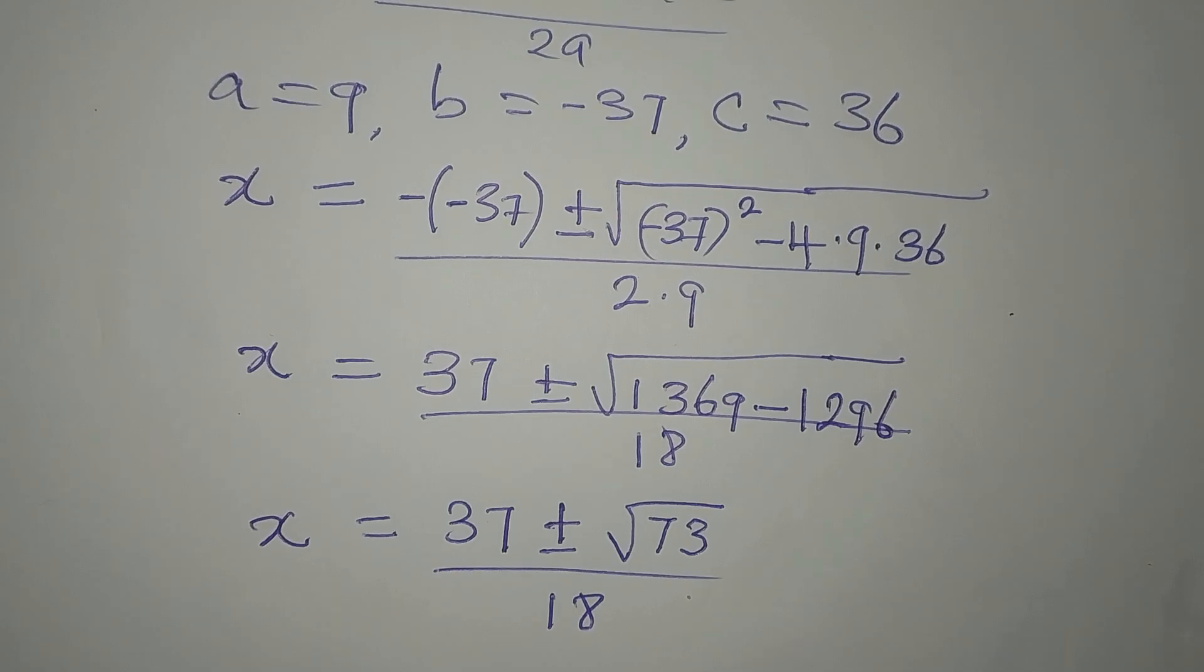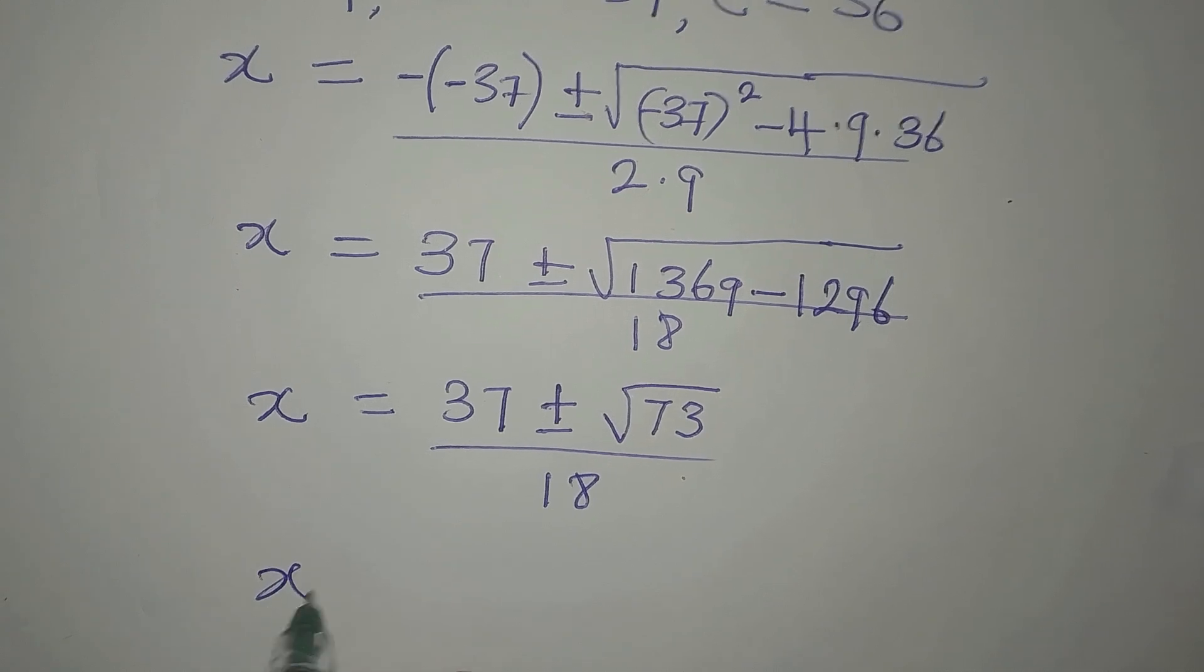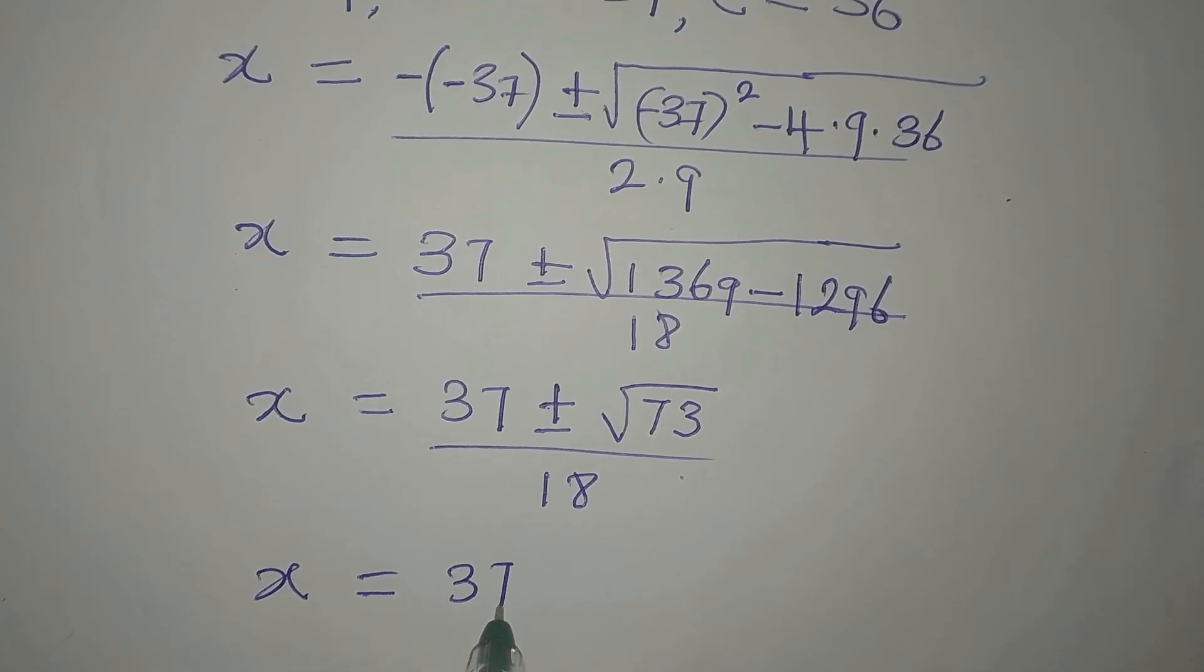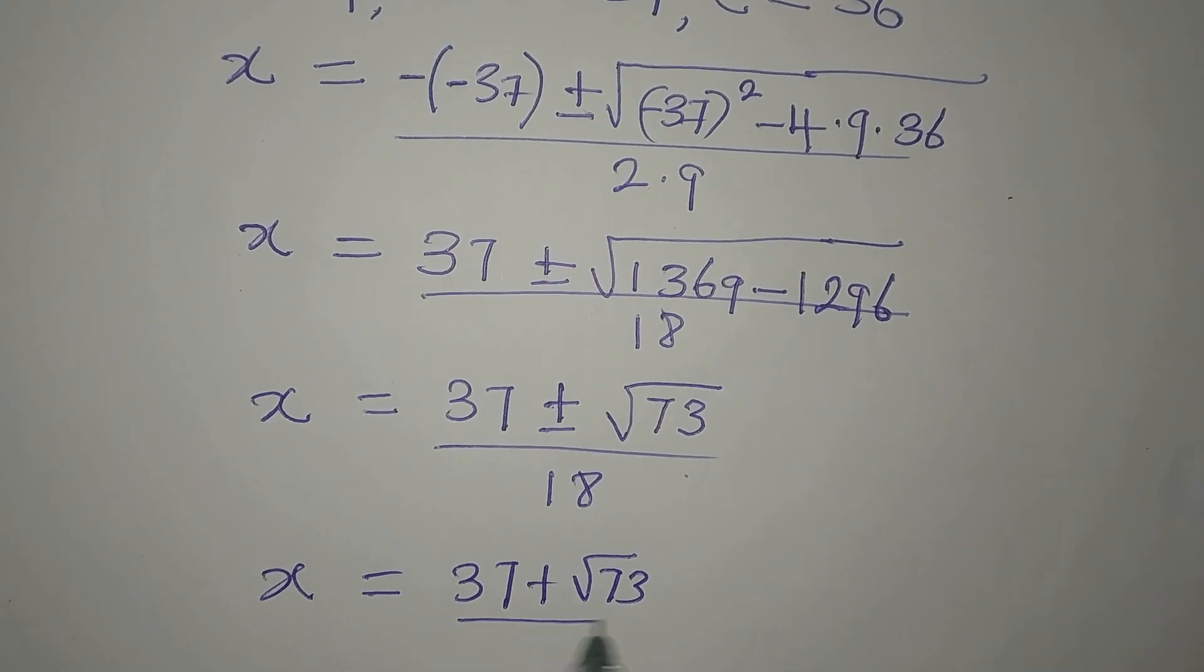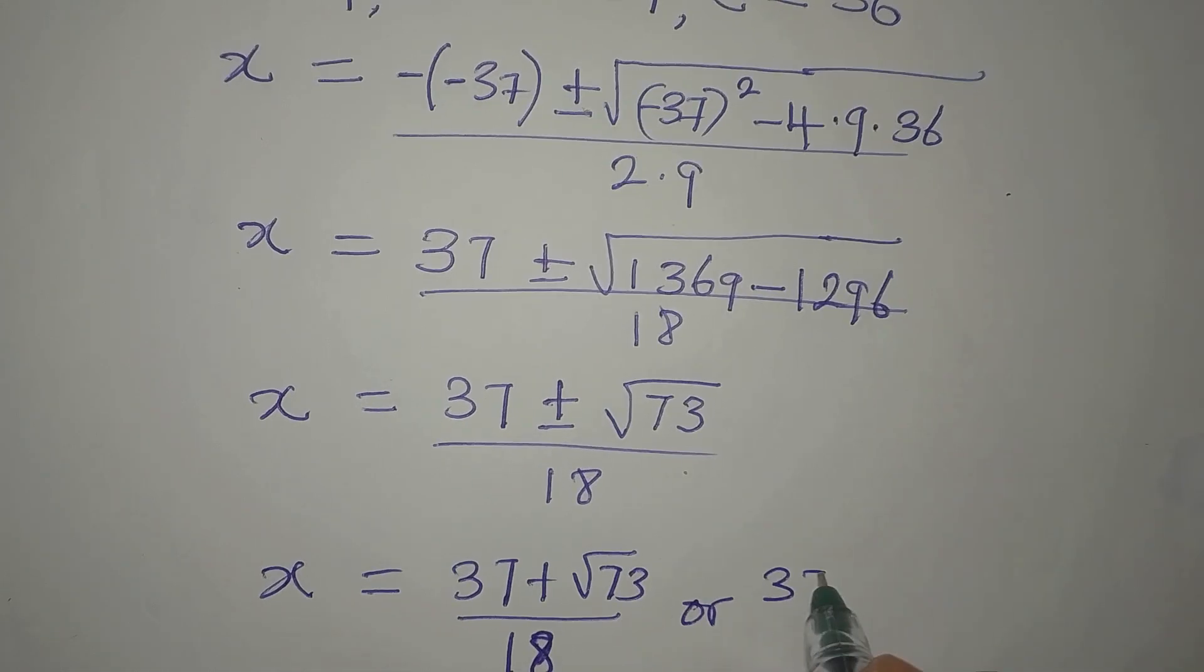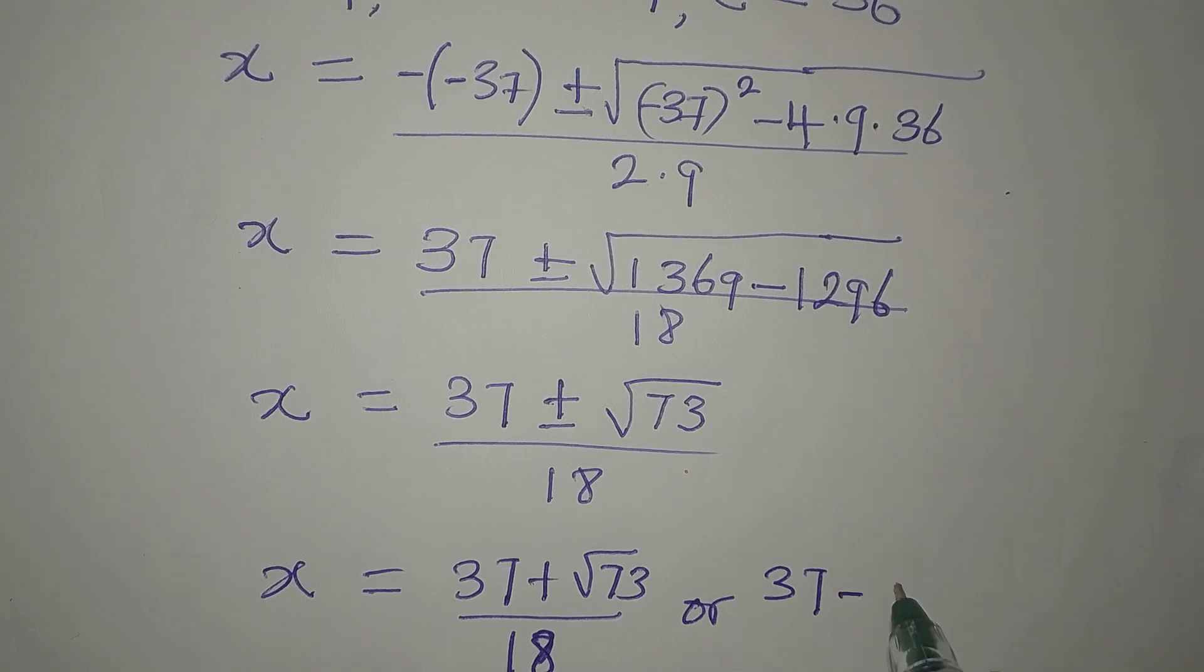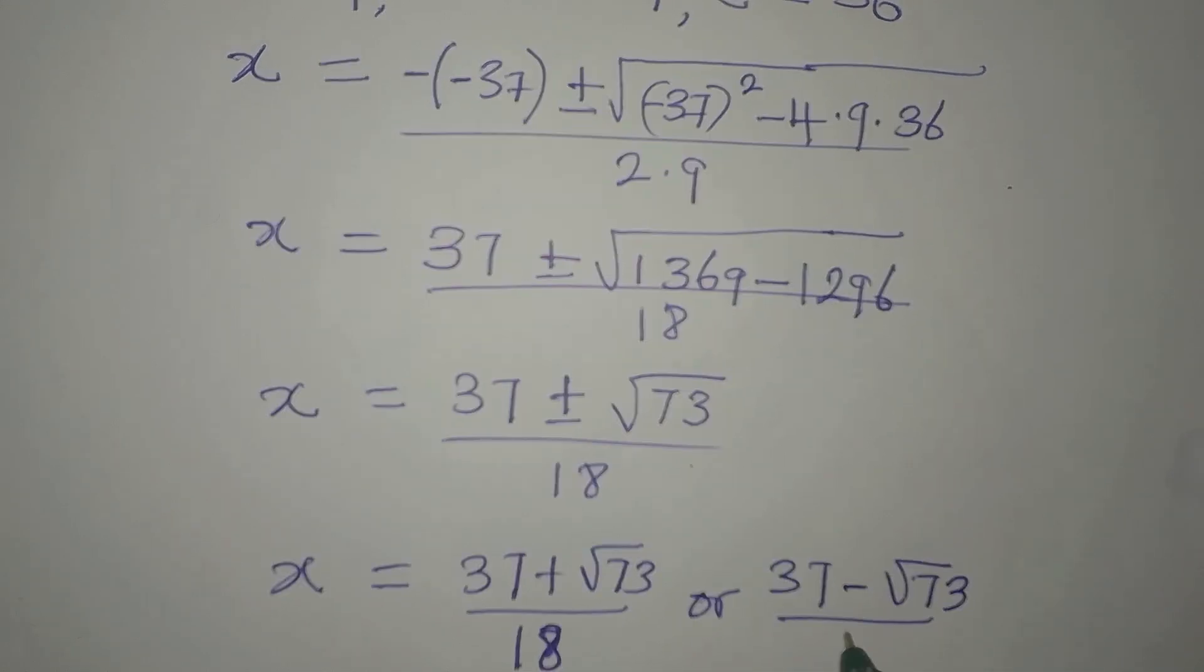Okay, this is a 2-in-1 solution. Our x is equal to 37 plus root of 73 over 18, or 37 minus root of 73 over 18.